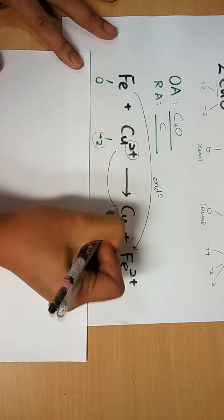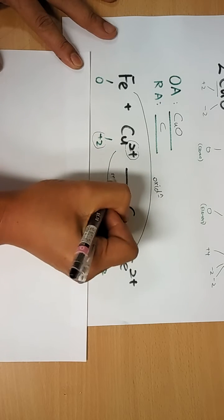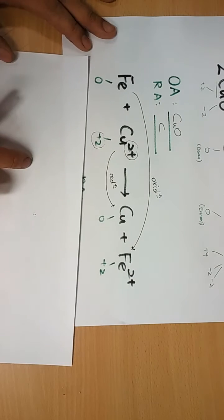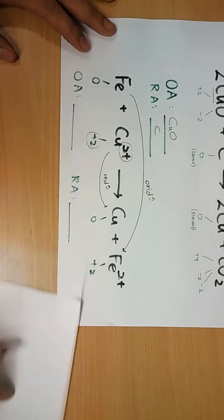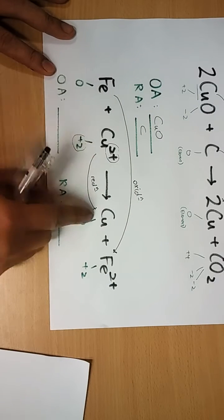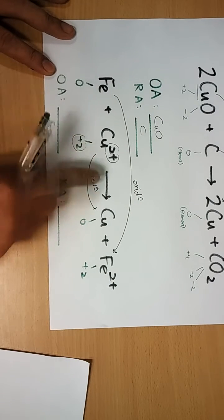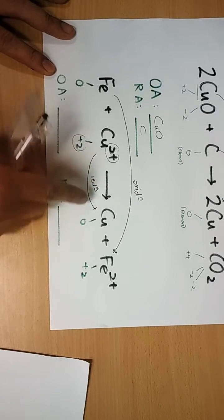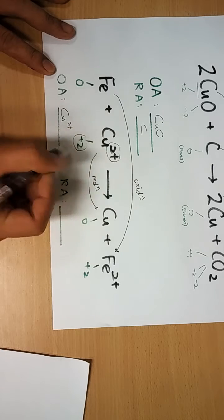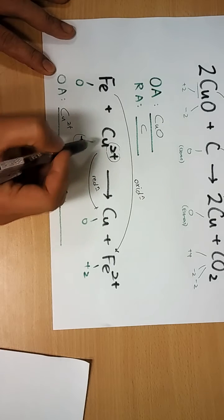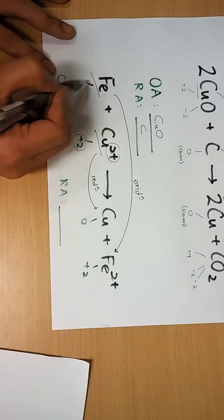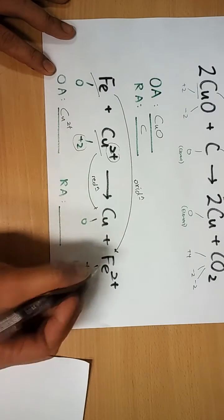Copper goes from plus 2 to 0 — this is reduction. So who is the oxidizing agent? The oxidizing agent is the one that is reduced. So Cu2+ is the oxidizing agent. The reducing agent is the one whose oxidation state has increased.